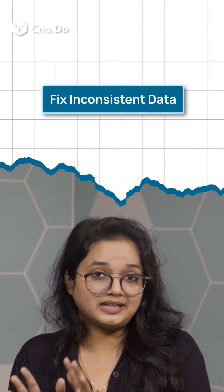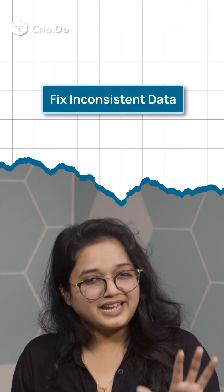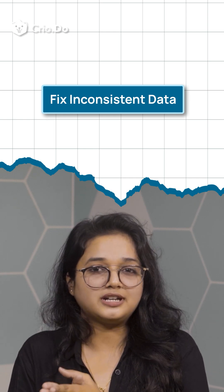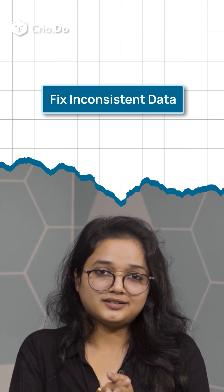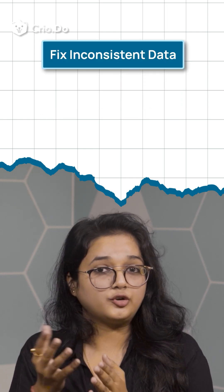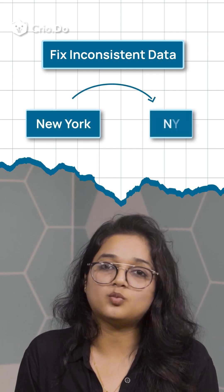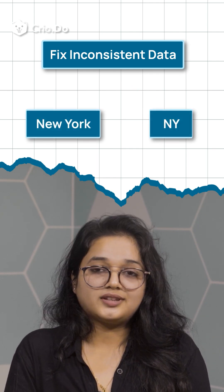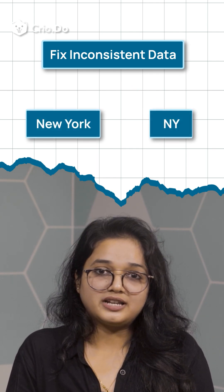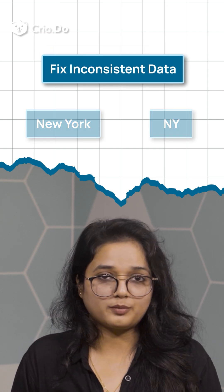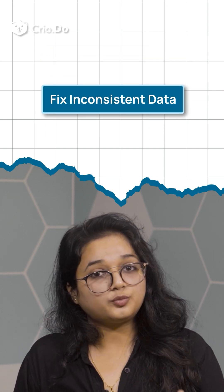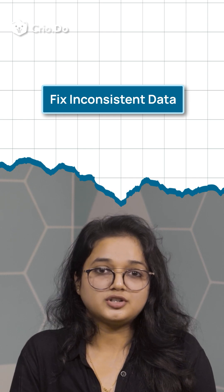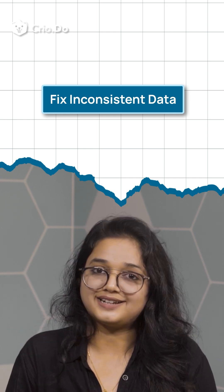Fix inconsistent data. Inconsistencies arise when similar data is entered in different formats or terms, such as having 'New York' in one place and 'NY' in another. Correcting these ensures the same value is represented uniformly. Use mappings, find-and-replace functions, or code standardization to align the dataset.